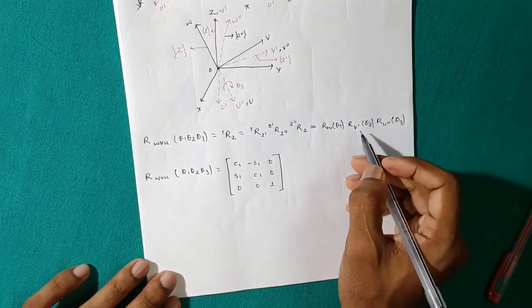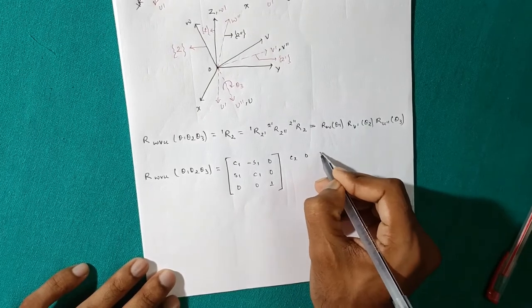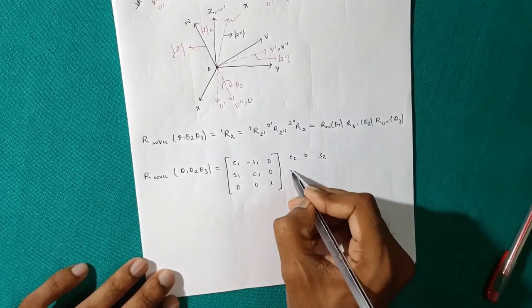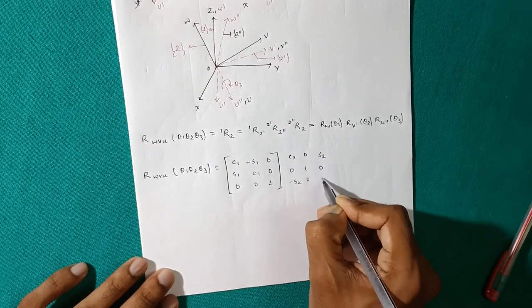Similarly, for R_V dash theta2: C2, 0, S2; 0, 1, 0; -S2, 0, C2.